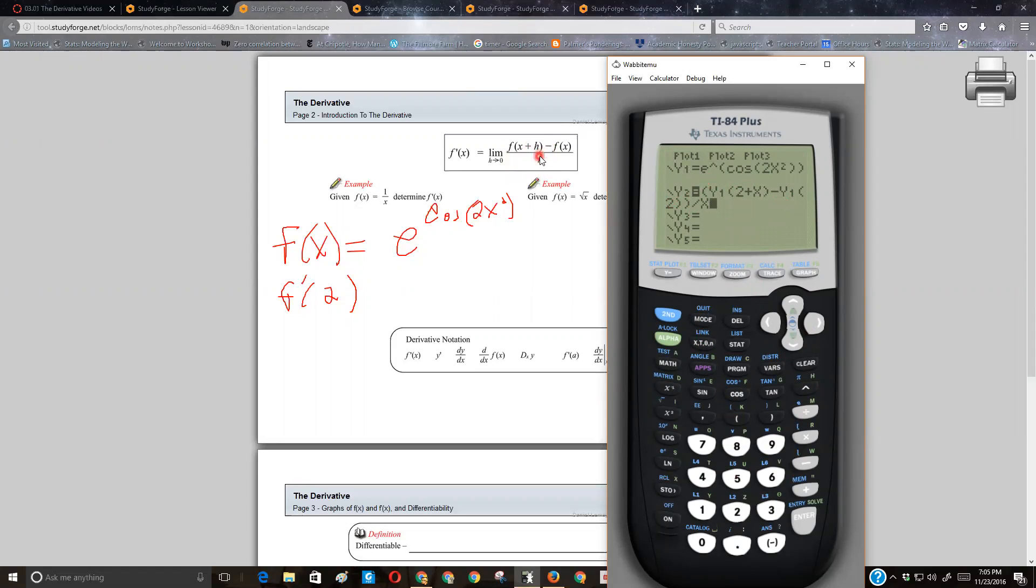So now what I'm going to do is let the calculator take this limit as h or x goes to zero, and the way you do that, if you press second window, that gets you into this table setup. I'm going to do my table start at zero, and then I'm going to have a really small change in table. I mean, I'm going to go like one ten thousandth, and then what I'm going to do is second table.